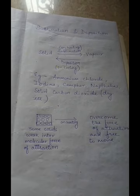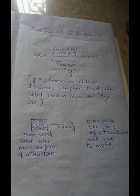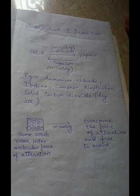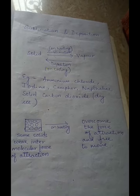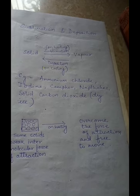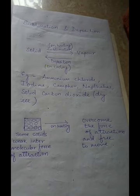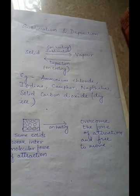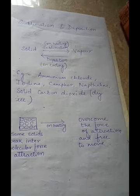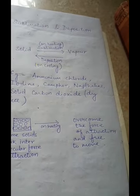Sublimation is the process by which a solid, when heated, changes directly to vapor without undergoing any liquid state. Deposition or solidification is the process when vapor changes directly to solid, again without undergoing any liquid state. During sublimation, heat is supplied, and during deposition, heat is rejected. Examples include ammonium chloride, iodine, camphor, naphthalene, and solid carbon dioxide (dry ice).